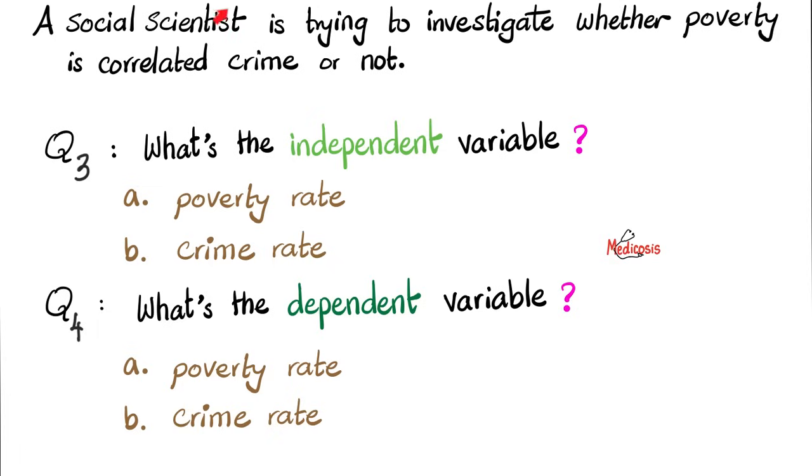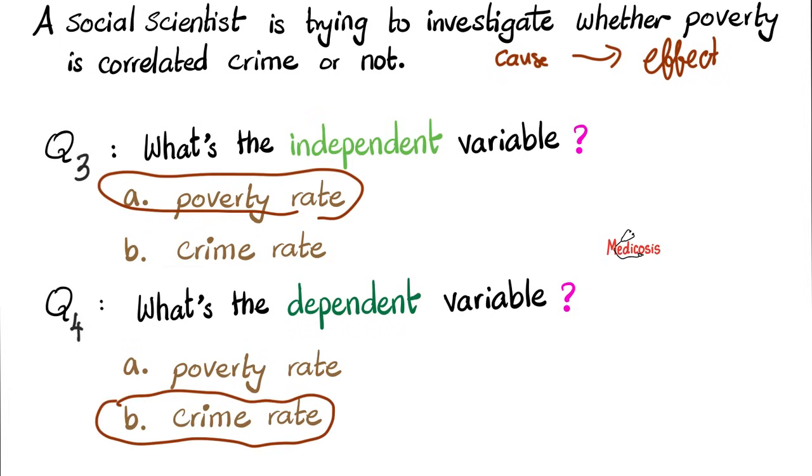Here is another question for you. A social scientist is trying to investigate whether poverty is correlated with crime rate or not. What is the independent variable? Is it the poverty rate or the crime rate? How about the dependent variable? Is it the poverty rate or the crime rate in this case? Please pause the video and try to figure this out. Okay, what should we do? We should always ask ourselves there is a cause followed by an effect. In this scenario, what's the cause? The cause is the poverty. Okay, so this is the independent variable. And what's the effect? The crime. So crime rate is the dependent variable. Does increased poverty rate correlate with an increase in crime rate?